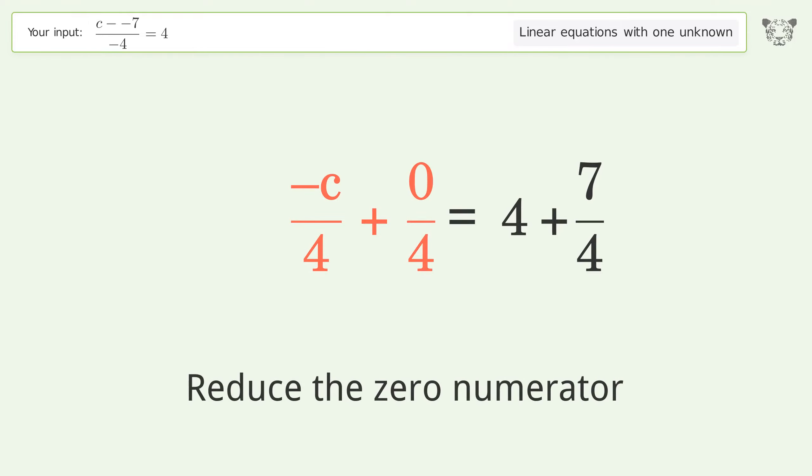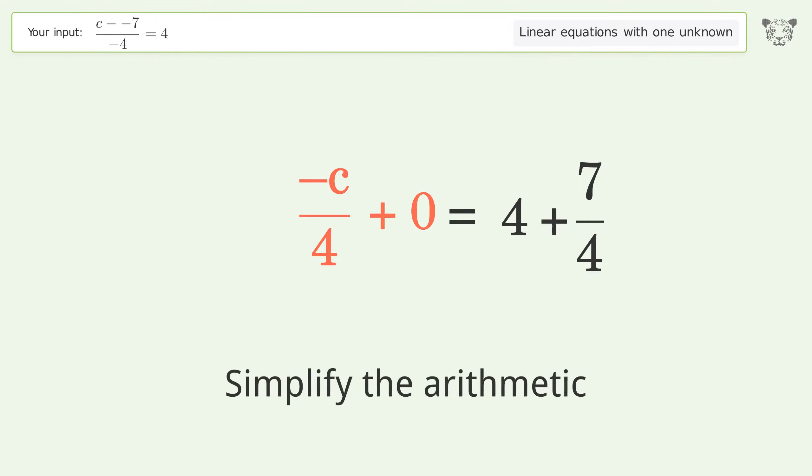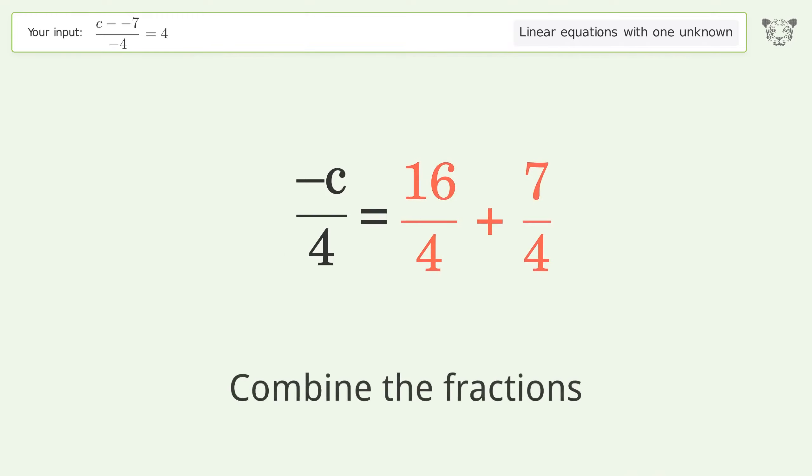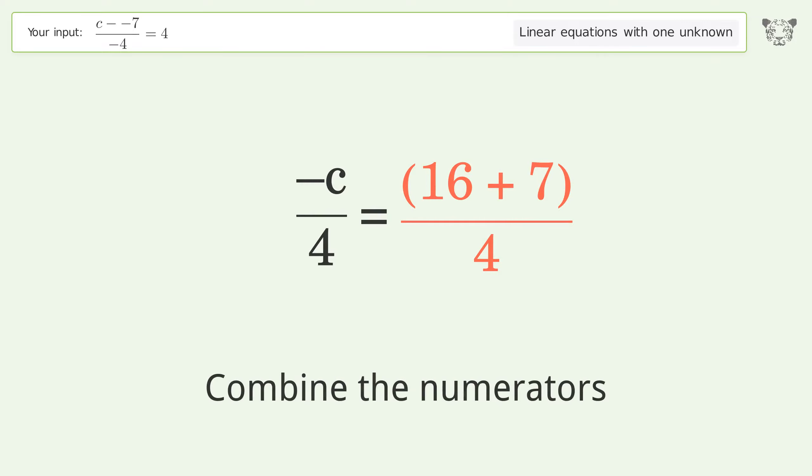Reduce the zero numerator and simplify the arithmetic. Convert the integer into a fraction, then combine the fractions and combine the numerators.